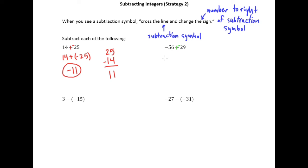And let's rewrite it to clean it up here: negative 56 plus negative 29. And again we have addition so we know what to do. The signs are the same so we will add the absolute values. And since they're both negative, the answer is negative 85.